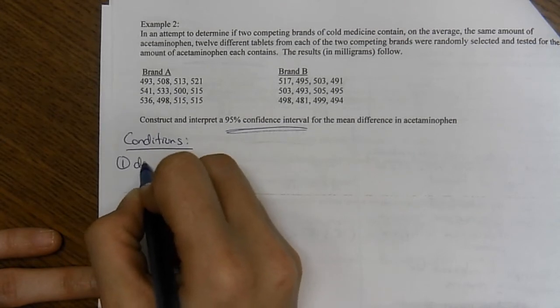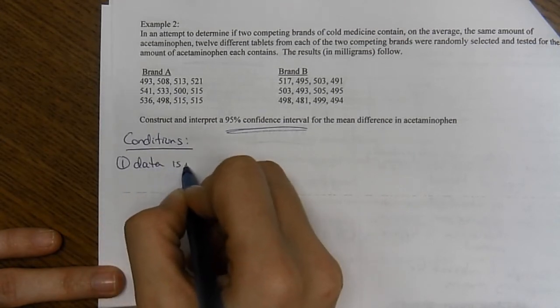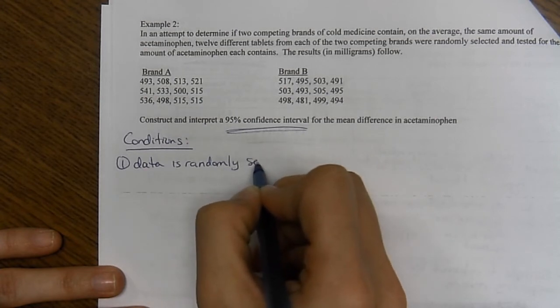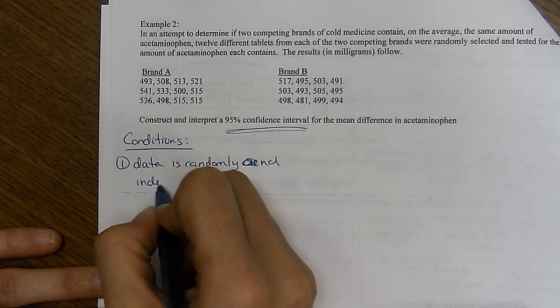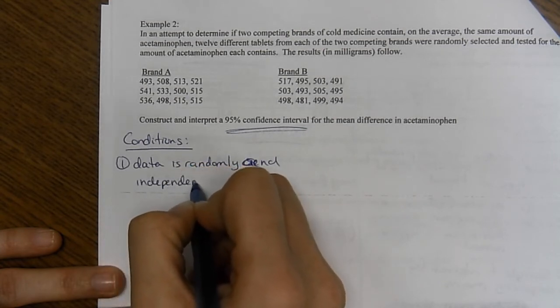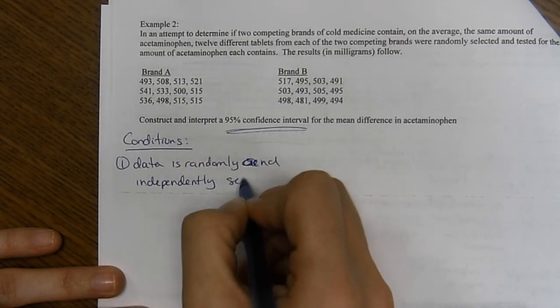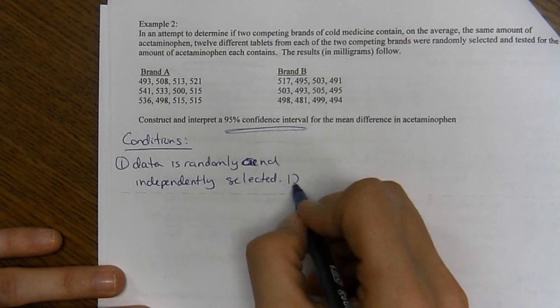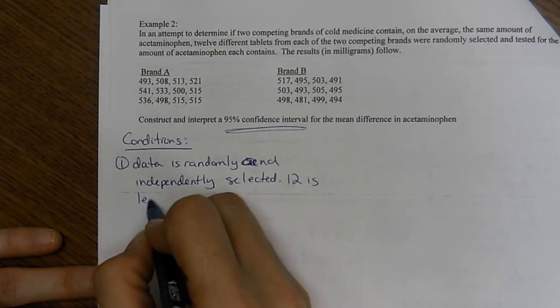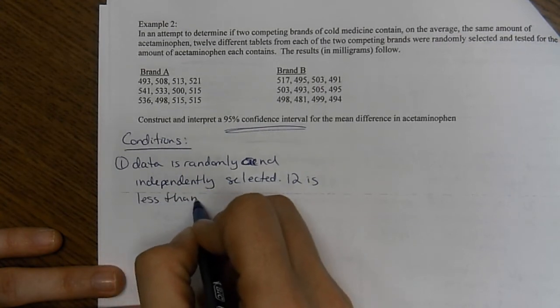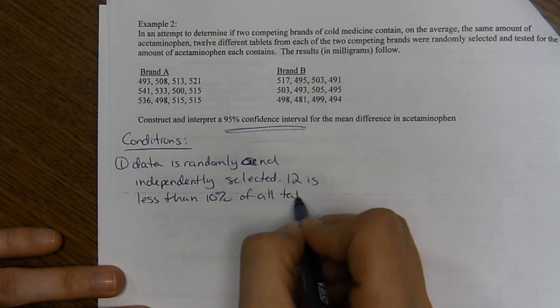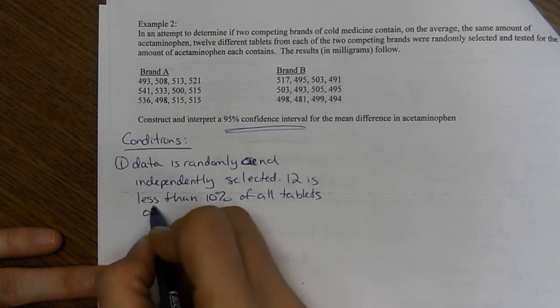So condition two, we're going to be fine, but let's write condition one first. I got ahead of myself. So data is randomly and independently selected. 12 is less than 10% of all tablets of each brand.